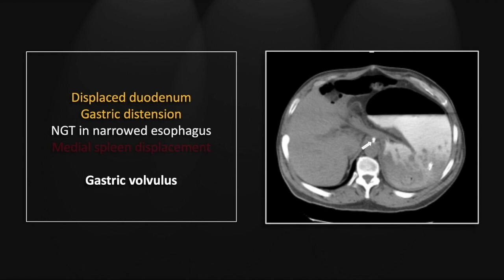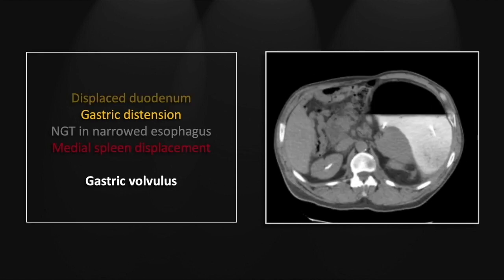In addition, follow the nasogastric tube, especially on the movie version, which will really help you identify the location of the gastroesophageal junction. On a lower cut, you can again appreciate the dilation of the stomach and the medial displacement of the spleen, which is often seen accompanying gastric volvulus due to the drag of the leonogastric ligament.